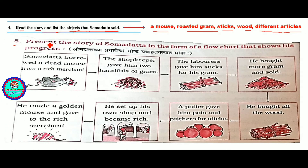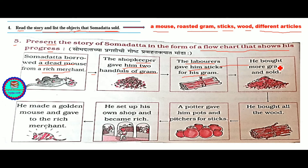Question number 5: present the story of Somdatta in the form of a flowchart showing his progress. Somdatta borrowed a dead mouse from the rich merchant. The shopkeeper gave him two handfuls of grams. The labourers gave him sticks for his grams. He bought more grams and sold. He bought all the wood. A potter gave him pots and pitchers for sticks. He set up his own shop and became rich. He made a golden mouse and returned it to the rich merchant.